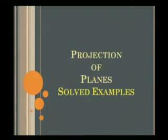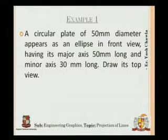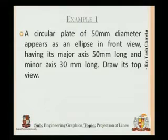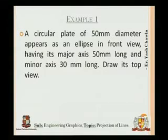Let's start solving examples. Last time we solved three examples, and this time in approximately two hours we'll solve about seven to nine examples as time permits. The first question is an example of a single oblique plane — where the plane is oblique to a single axis, either to HP or VP. A circular plate of 50 mm diameter appears as an ellipse in the front view, having its major axis 50 mm long and minor axis 30 mm long. We have to draw its top view.